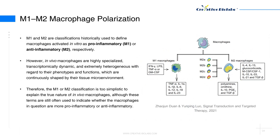M1 and M2 are classifications historically used to define macrophages activated in vitro as pro-inflammatory (M1) or anti-inflammatory (M2), respectively. However, in vivo macrophages are highly specialized, transcriptomically dynamic, and extremely heterogeneous with regards to their phenotypes and functions, which are continuously shaped by their tissue microenvironment. Therefore, the M1 or M2 classification is too simplistic to explain the true nature of in vivo macrophages, although these terms are still often used to indicate whether macrophages are more pro-inflammatory or anti-inflammatory.